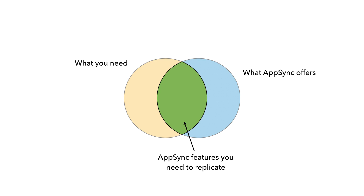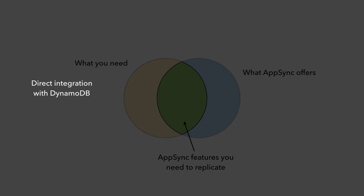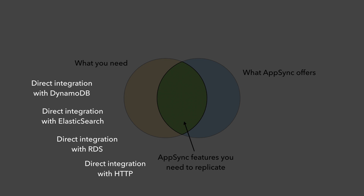And if you're running GraphQL in a Lambda function, you also have to replicate all the things that AppSync would have given you, like direct integration with DynamoDB, with Elasticsearch, with RDS, and with HTTP endpoints. You will have to write these resolvers yourself, and you will have to implement your own caching and manage the cache nodes yourself, in addition to the Lambda function that runs the GraphQL server. You will also have to replicate those detailed resolver logs for debugging. And a big thing you lose out on is the built-in support for group-based authentication with Cognito, which can be a tricky thing to implement yourself.